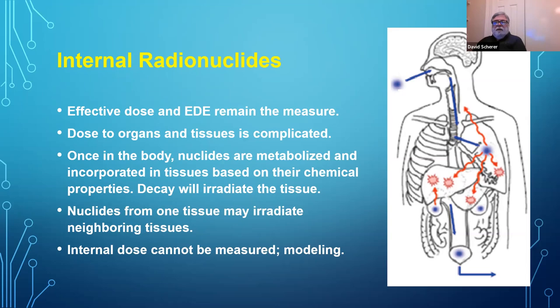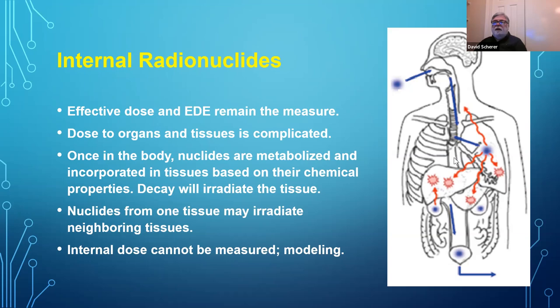When you have internal radionuclides, the effective dose or effective dose equivalent remains the measure we're going to use. The doses to individual organs and tissues are going to be complicated because once the materials are in the body — either through inhalation or ingestion usually — the radionuclides will move around in the body and eventually settle into a particular tissue. Some chemicals go to the bone, some accumulate in the liver, some in the brain or different tissues. They will irradiate that tissue, but they can also irradiate other tissues, particularly for gamma emitters. Material lodged in the lung can irradiate the liver or the spleen.